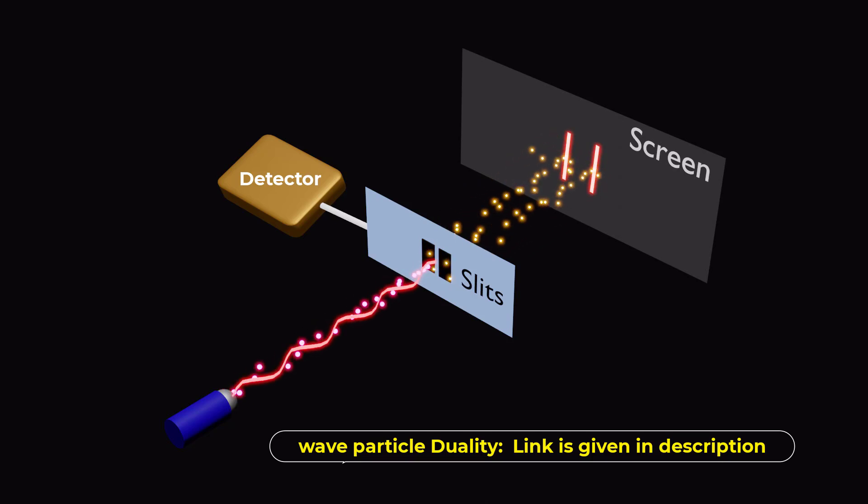Light is neither strictly a wave or a particle, but possesses characteristics of both, therefore it is called wavicles.